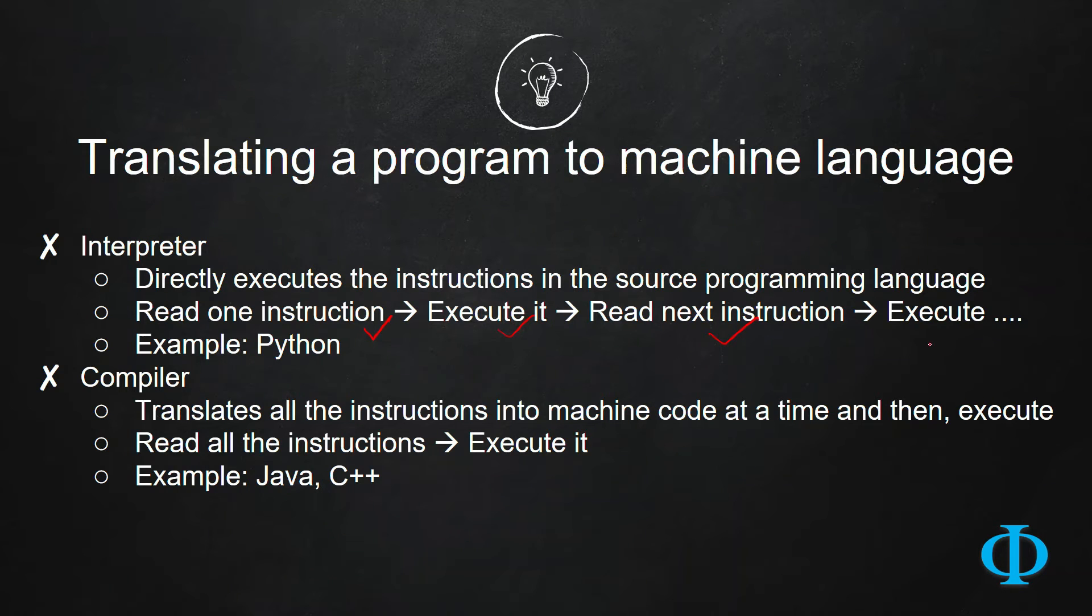It's simply like translating a paragraph from English to Spanish. You read one English sentence and then convert it to Spanish, then you go to the second English sentence and convert it to Spanish. So this type of translation is called interpretation in the context of programming, and the software which does this type of translation is called an interpreter.